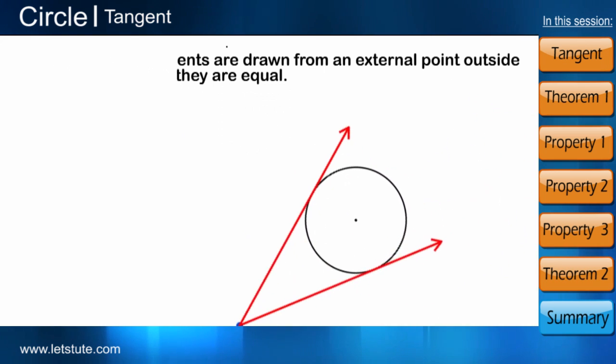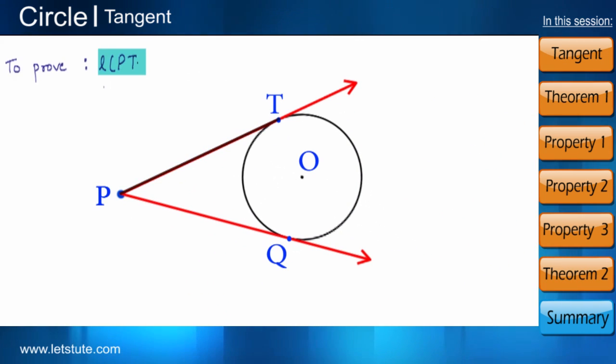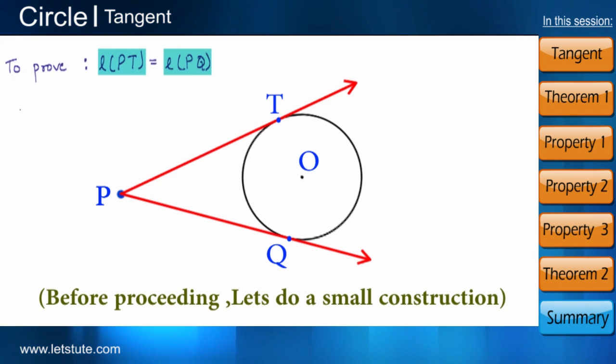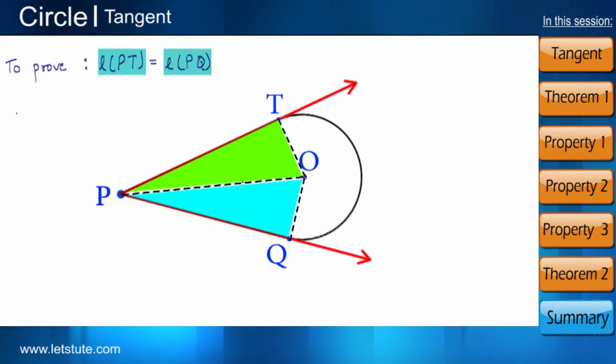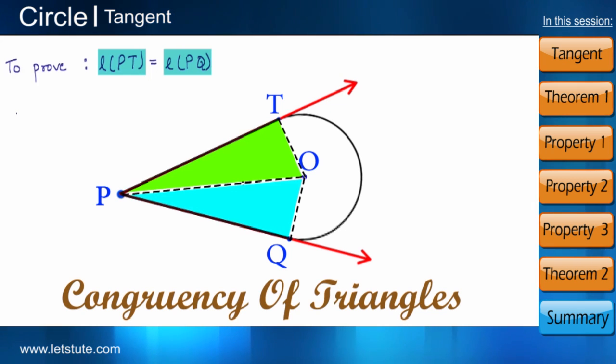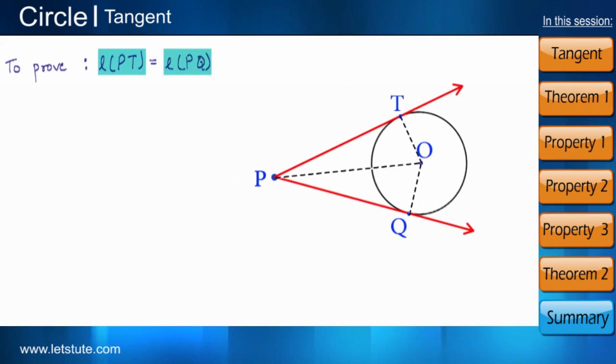Now let us use concepts of geometry to prove that length of PT is equal to length of PQ. So what do you think? How can we prove that these two tangents are congruent? To prove this, let us do a small construction. We draw a line from point P to the center of the circle that is point O and we join OT and OQ also. Now we can see that we have two triangles where the tangents are the two sides of these triangles. Let us use the concept of congruency of triangles and prove that the sides are also congruent.